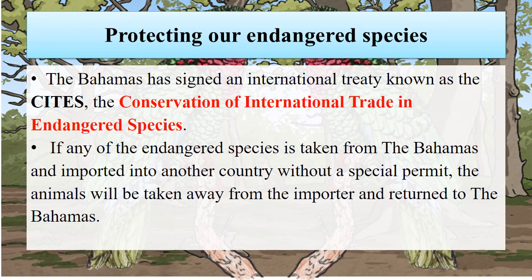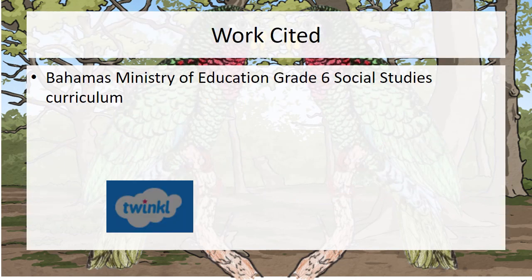Protecting our endangered species is a very important aspect for us. The Bahamas has signed an international treaty known as CITES, which stands for Convention on International Trade in Endangered Species. If any of the endangered species is taken from the Bahamas and imported into another country without a special permit, the animals will be taken away from the importer and returned to the Bahamas. This has been our lesson on protecting our land.